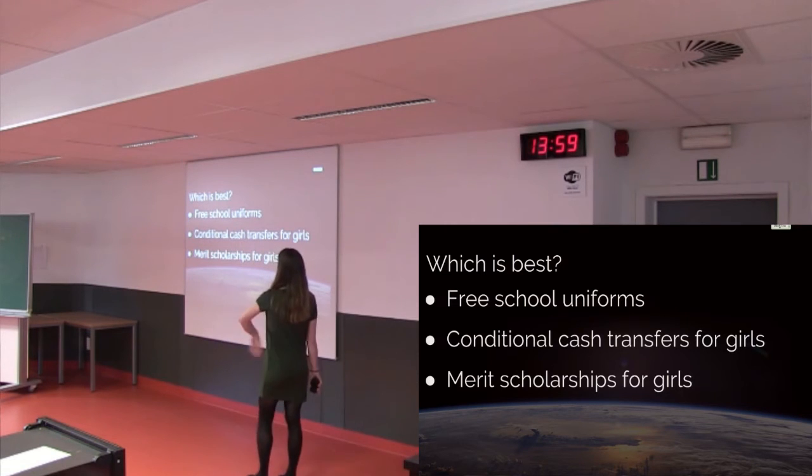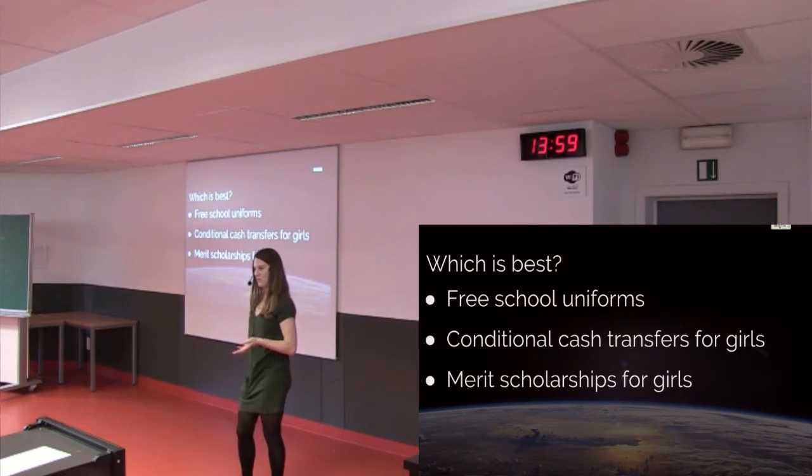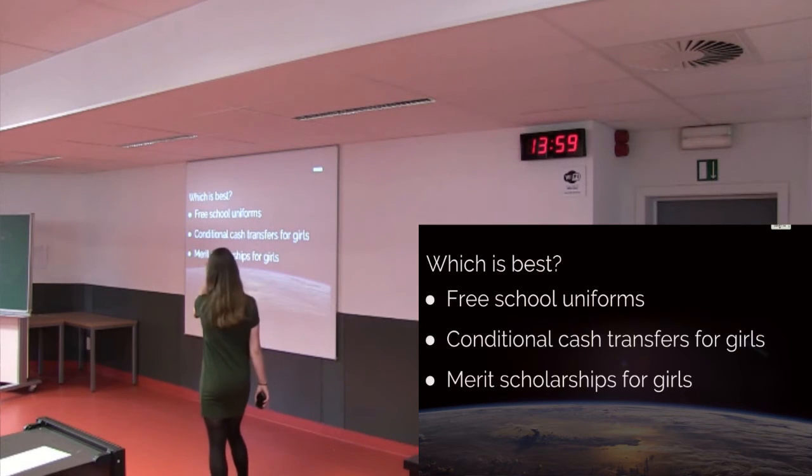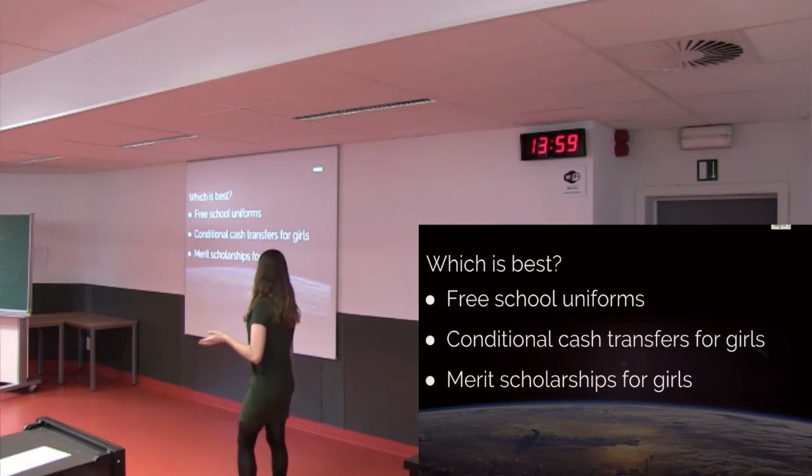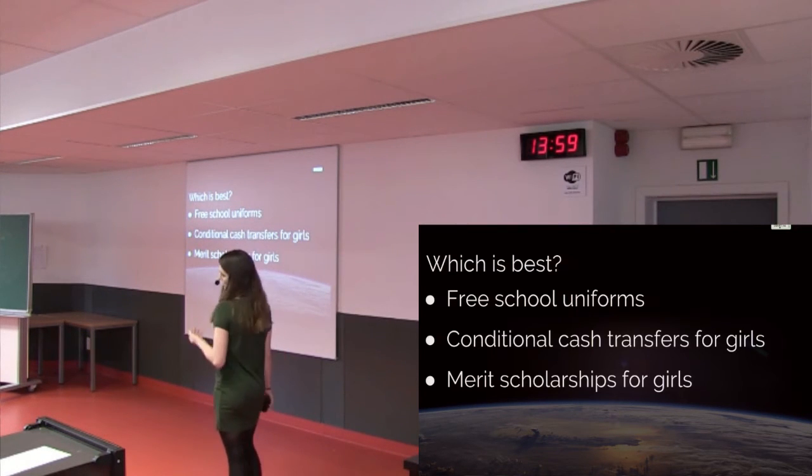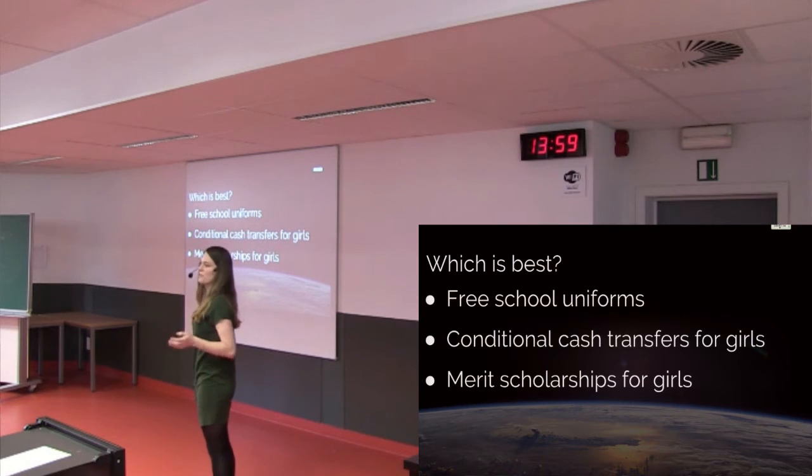So the first program provided free school uniforms to all the students regardless. You had to go to the school, pick up a school uniform and then the children could go. Then the second program provided cash transfers to the parents and families of girl children to try and incentivize them to actually send their female children to school. And then the last one was an academic scholarship for female children who performed really well at school because there was this idea that there was a misunderstanding amongst families who were worried that their female children weren't actually progressing as well in their studies as some of the other children.